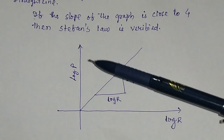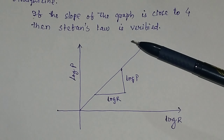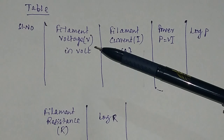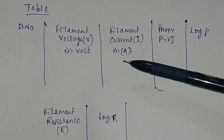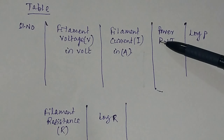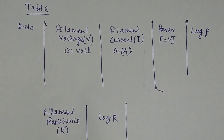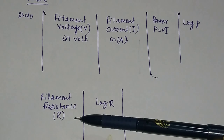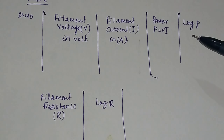From Stefan's law, we know that the heat energy radiated by a body is given by the formula: H = E·A·σ·T⁴, where E is the emissivity of the body, σ is Stefan's constant, A is the area of the body, and T is the absolute temperature. We have to prove this Stefan's law by using electrical method. The amount of heat energy produced by heating a 12 volt electric bulb can be determined in terms of electric power, because electric power P = V × I.